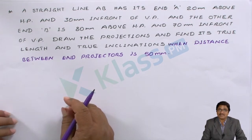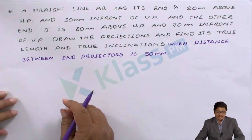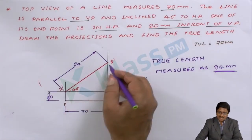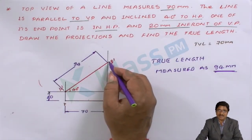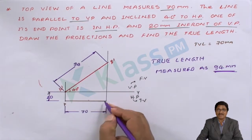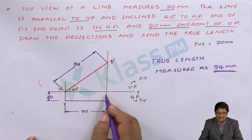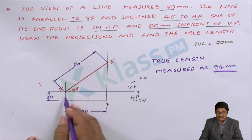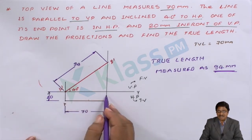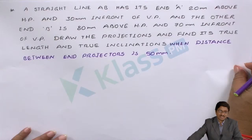Here you have to understand what is meant by end projectors. End projectors are nothing but — I will explain from the previous problem. This is the end point, this is the end point. Projectors mean the line of alignment what we have drawn, projected to the other view. This is the projector line, this is the projector line. This is the distance between the projectors, and that has been given here.